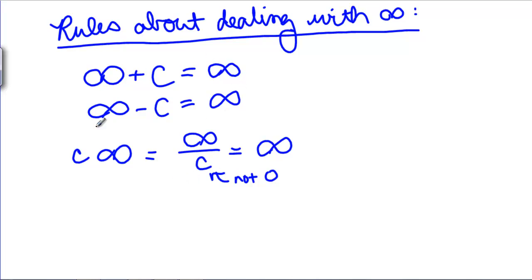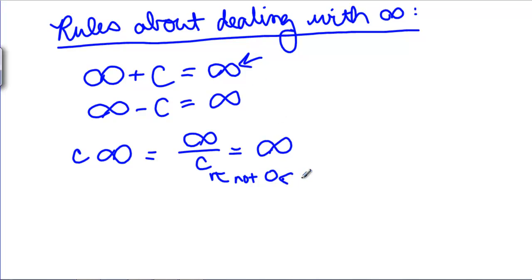There are also a couple of times when even something as innocent-looking as 1 combined with infinity can be confusing. Let's look at some of these examples of forms — things that a limit could look like while you're trying to simplify it — and see if we can figure out whether we should be able to determine the answer, or whether they're indeterminate. We need to know how it gets to infinity or how it gets to zero before we can say what the answer is.